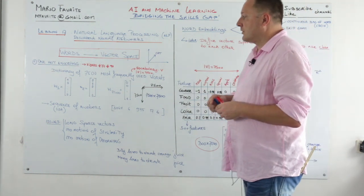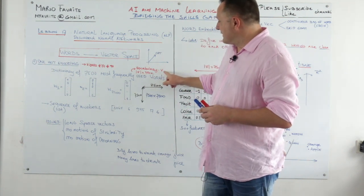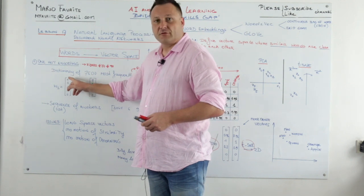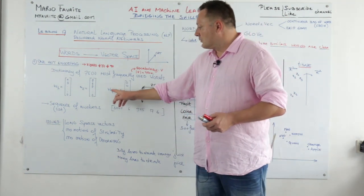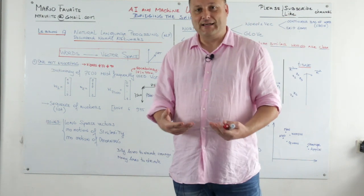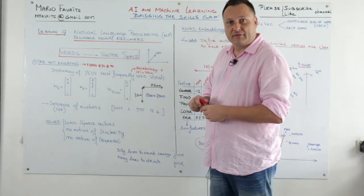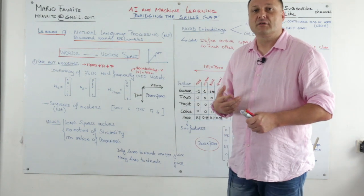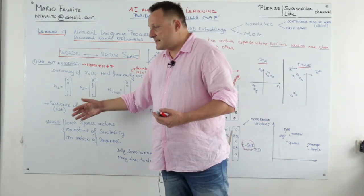In one-hot encoding, for every word in your vocabulary you make a vector, and every word is assigned an index in that vector. If your vocabulary V is 7,500 words, you start with W1 where the first index is a one, going all the way down to word 7,500. So you have vectors of length 7,500, and a vocabulary of 7,500 words — a 7,500 by 7,500 matrix of information.